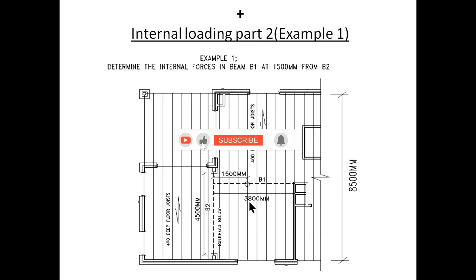Here we have a typical first floor layout in a double storey dwelling and we have highlighted here beams B1 and B2 to look at. B1 is a typical timber beam and B2 is a steel beam and there's a bulkhead under B2. The floor joists are running up and down the page at 400 millimeters deep. For this example we were asked to calculate the internal loads of beam B1 at 1500 millimeters from B2.